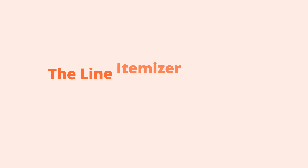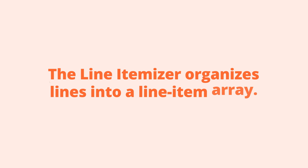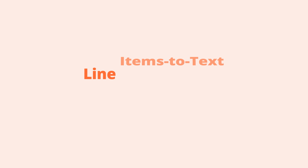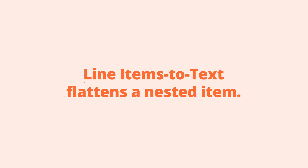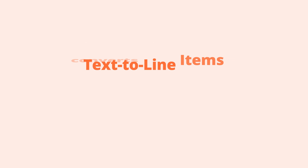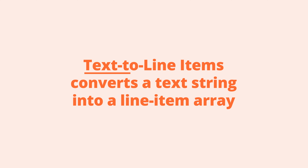Formatter has three functions that will help you work with line items to turn them into the format another app can use. The Line Itemizer creates a new line item array out of multiple strings of text or even multiple existing arrays. Line Items to Text takes a line item array and turns it into a comma-separated list — think of it like a bullet-pointed list where you remove the bullets and now you have a paragraph. Text to Line Items takes a comma-separated list and turns it into a line item array, like taking a paragraph of text and turning it into a list with bullet points.